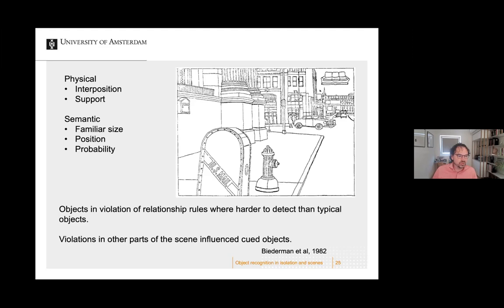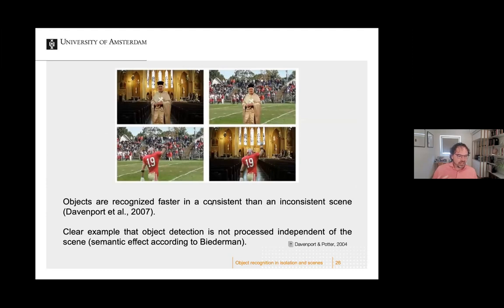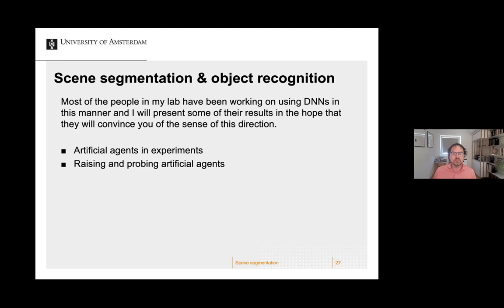Biederman used images shown with a stroboscope and investigated how fast an object was recognized when violations of these five rules occurred. When violations were present, people were slower to recognize the images — very pioneering and challenging research. This was confirmed in more recent times by Davenport and Potter, who showed that if you show a member of the clergy in a church it's easy to recognize, but when placed on a football field recognition is harder. This is a clear example that object detection is not processed independently of the scene.